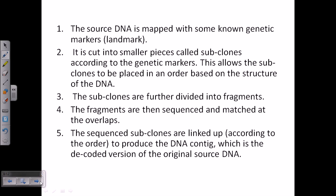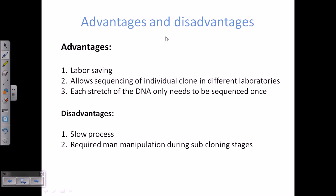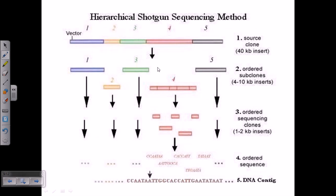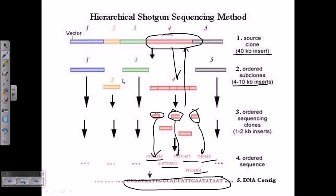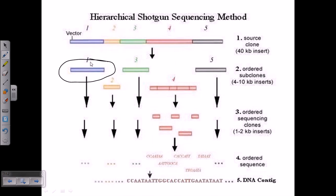The advantages of hierarchical shotgun sequencing are that it is labor saving and allows the sequencing of individual clones in different laboratories. If we break the original vector into small segments and produce libraries, we can send those libraries to different laboratories. We can send this part to one laboratory to sequence it.